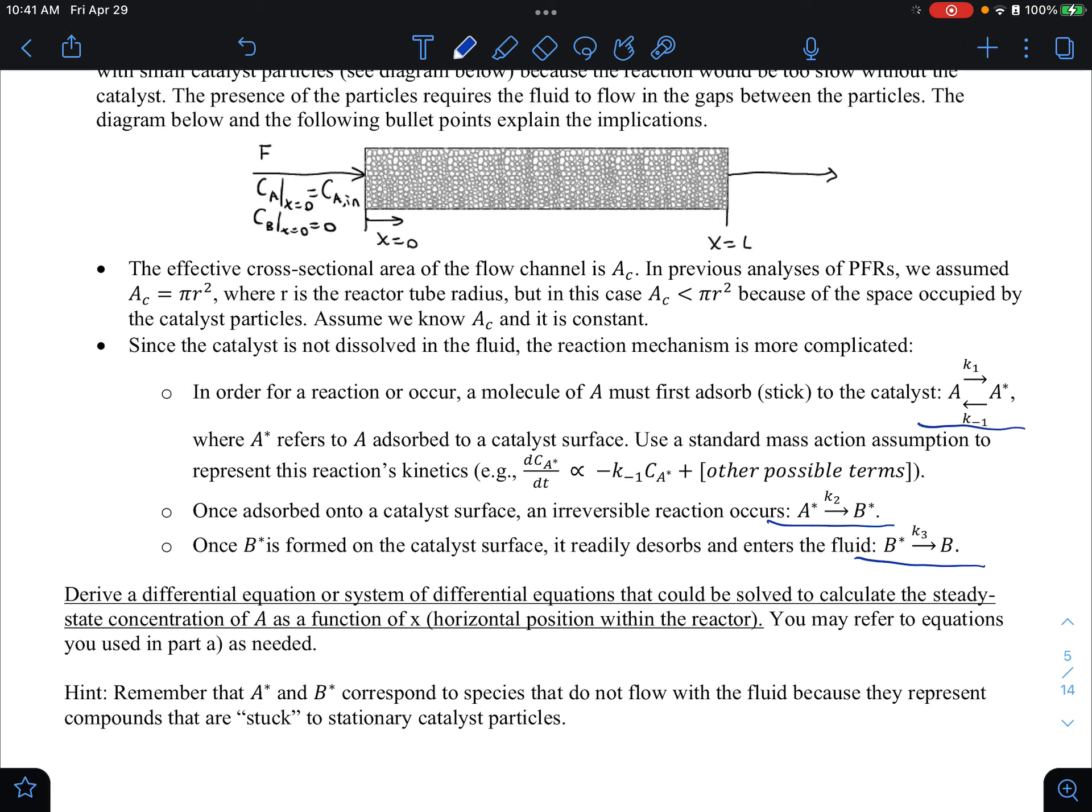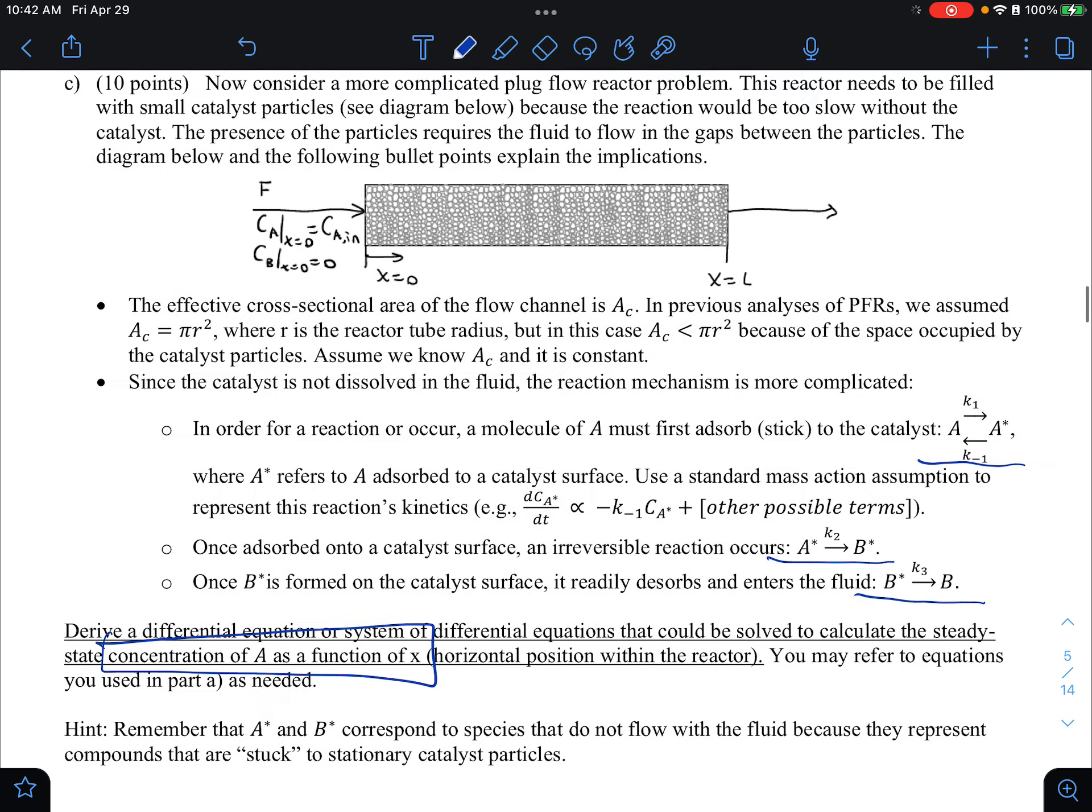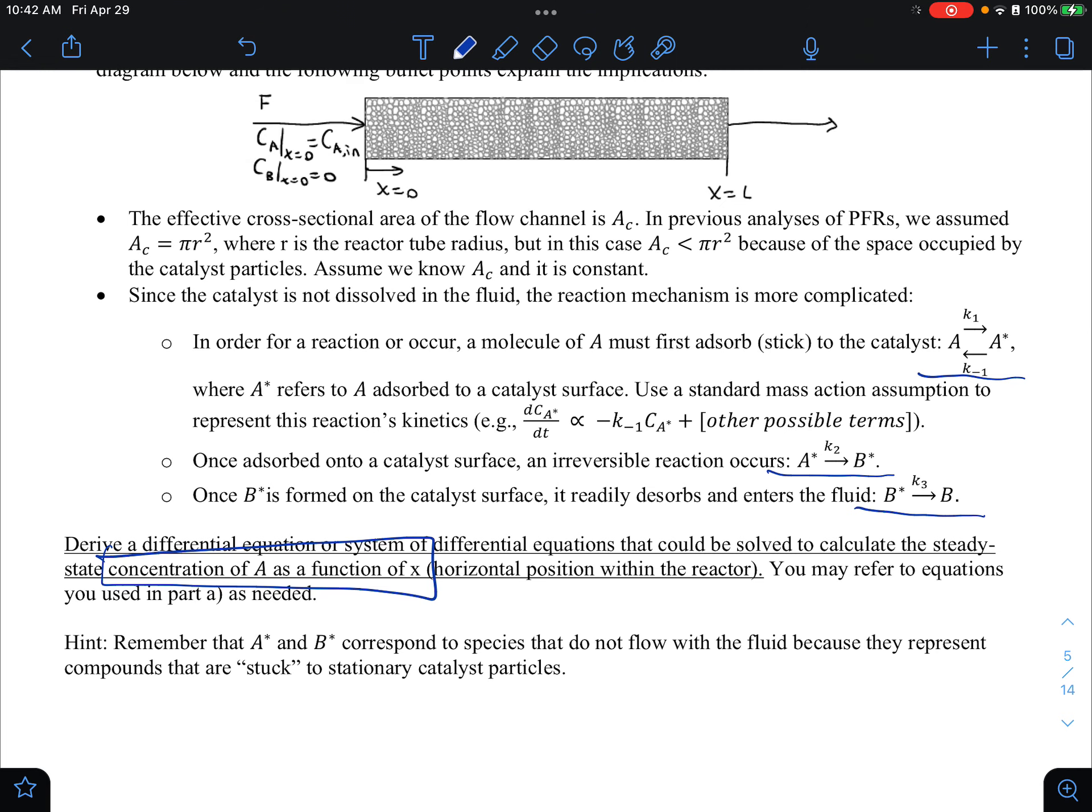And we're once again asked to derive a differential equation or system of differential equations that could be solved to calculate steady state concentration of A as a function of X. Okay, so I'm going to box this. And so I say you can refer to the equations in part A as needed. So that suggests that some of the work in part A is actually translatable to this problem. And the hint here says, remember that A star and B star correspond to the species that do not flow with the fluid because they represent compounds that are stuck to the stationary catalyst particle. So this is the real twist here. And by the way, this question does not seem to ask about boundary conditions unless I'm missing it. I don't see any place where it asks about boundary conditions. So it's really about how do the balances change?